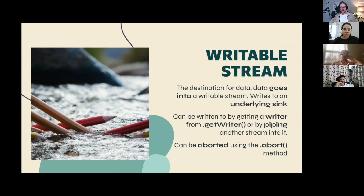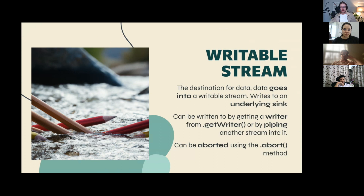The second type is the Writable Stream — the destination for all our chunks. Chunks are written to an underlying sink, which can be anything: a file, a database, the DOM, whatever you need.